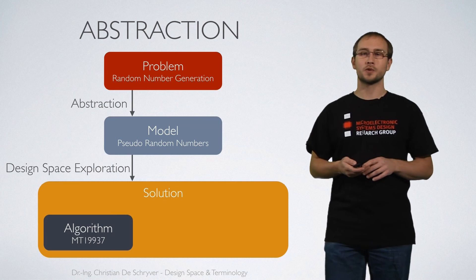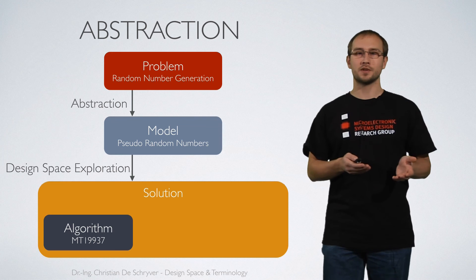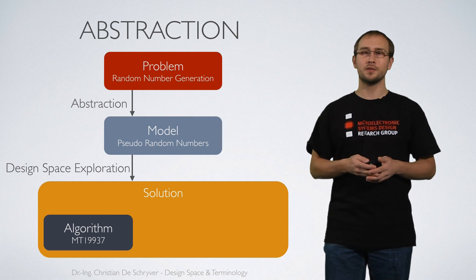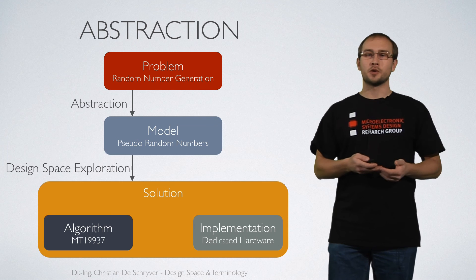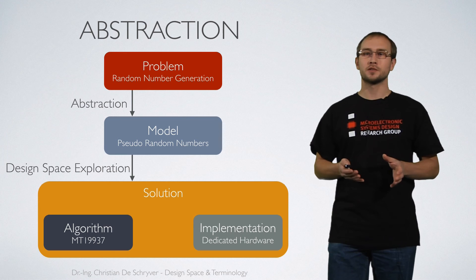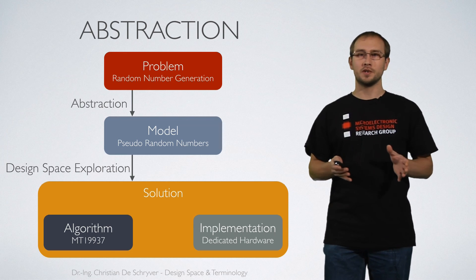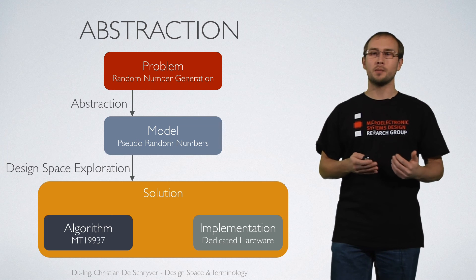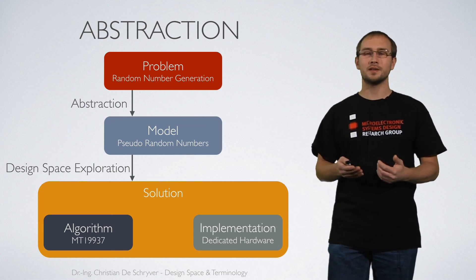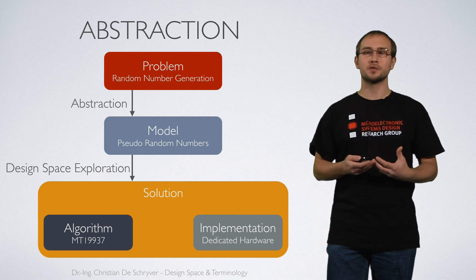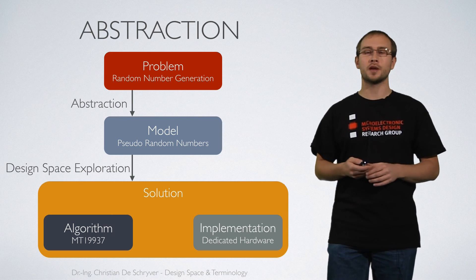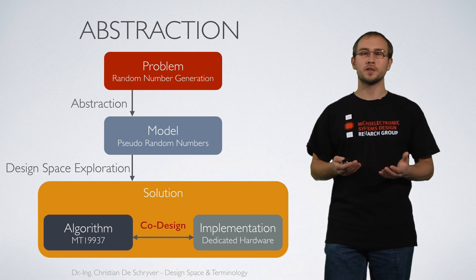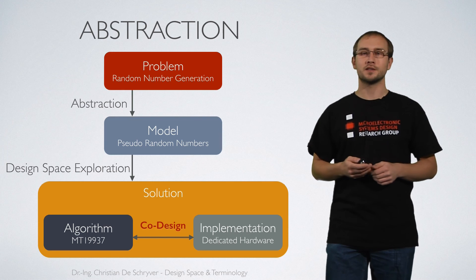The solution itself consists of the algorithm, in this case a Mersenne Twister 19937 and the implementation of this algorithm. That could be for example in dedicated hardware. It's very important to really exploit all the degrees of freedom you have during the design space exploration and to come up with a custom design in the end and a matching system that considers both hardware and algorithmic aspects to do this in a co-design way. That means we are always looking at algorithm and implementation at the same time.